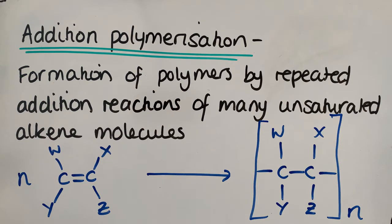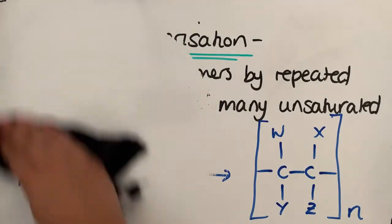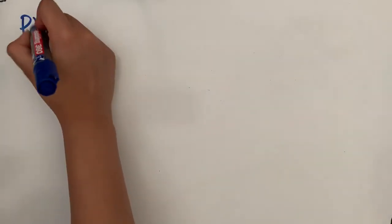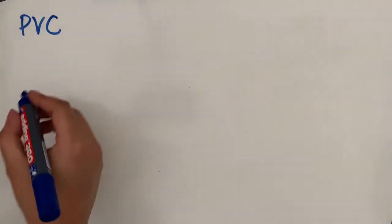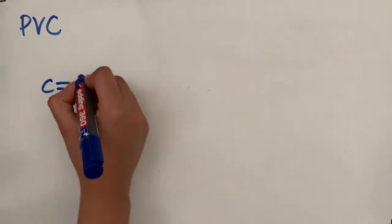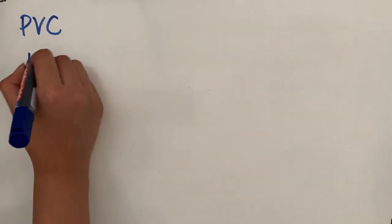So let's just have a look at some examples of addition polymers. Polyvinyl chloride, which is PVC, is an example of an addition polymer. It is made by this monomer over here.